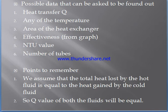Possible questions that can be asked include: heat transfer Q — using Q = hA·ΔT or Q = mCp·ΔT. Any one of the temperatures can be asked in an NTU method problem. The area of the heat exchanger can be asked using Q = hA·ΔT. Effectiveness can be calculated from the graph, the NTU value, and also the number of tubes or number of passes can be asked.